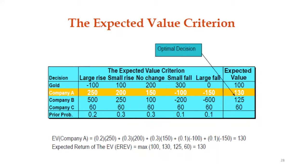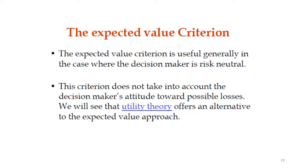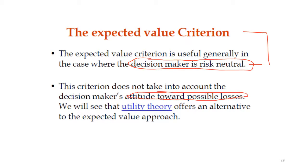The expected value criterion is used generally in cases where the decision maker is risk neutral. In the first category of decision making under uncertainty, this is similar to a neither pessimistic nor optimistic attitude. The decision does not correlate with the behavior of the decision maker, so this criterion does not take into account the decision maker's attitude toward possible losses.